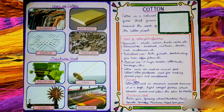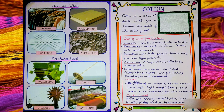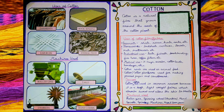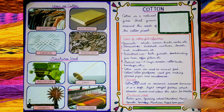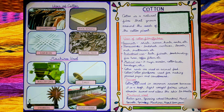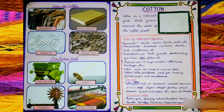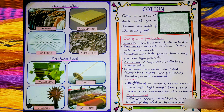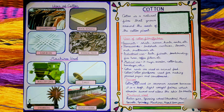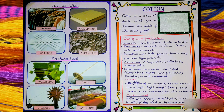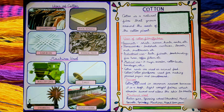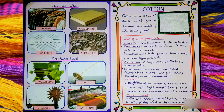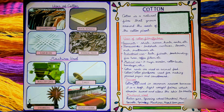Machines used for the production of cotton include roller gins, spinning wheel charka, hand spindle, spinning machines, hand loom, and power loom.